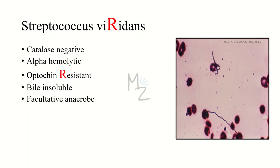Streptococcus viridans is catalase negative. Catalase is an enzyme released by certain bacteria that converts hydrogen peroxide into water and oxygen; the oxygen forms bubbles in a petri dish, test tube, or on a microscopic slide. This bacteria is alpha-hemolytic, meaning it causes partial hemolysis. Alpha-hemolytic bacteria are further classified based on optochin sensitivity. Streptococcus viridans is resistant to optochin — you can memorize this because 'viridans' and 'resistant' both contain the letter R. It is also bile insoluble, unlike Streptococcus pneumoniae which is bile soluble. It is a facultative anaerobe.